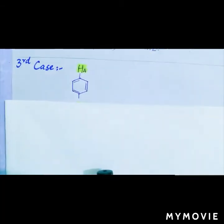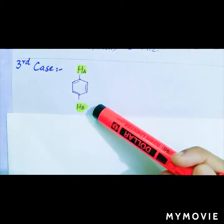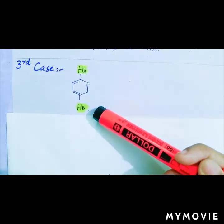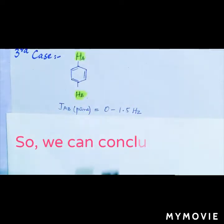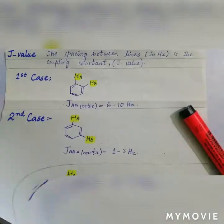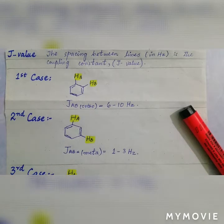In case of para positions, when protons Ha and Hb are at para positions, they will split each other with a J value which is between 0 to 1.5 hertz. It is the spacing between the lines of the signals.